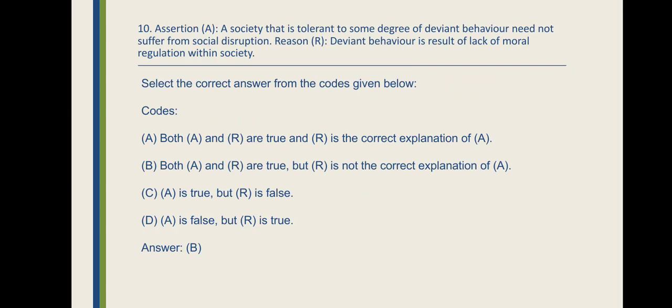Here the codes are Option A: Both A and R are true and R is the correct explanation of A. Option B: Both A and R are true but R is not the correct explanation of A. Option C: A is true but R is false. Option D: A is false but R is true. Here the correct answer is Option B, i.e., both A and R are true but R is not the correct explanation of A.